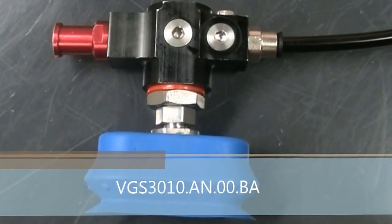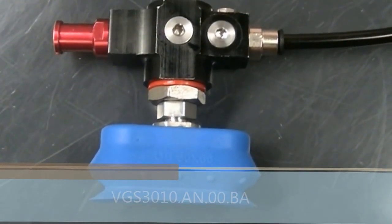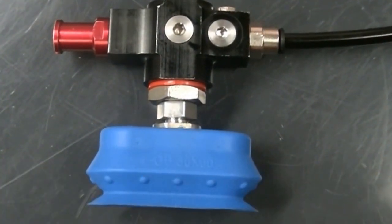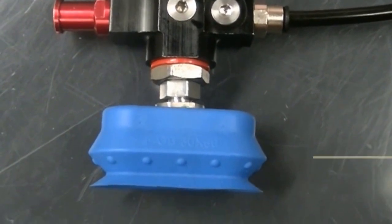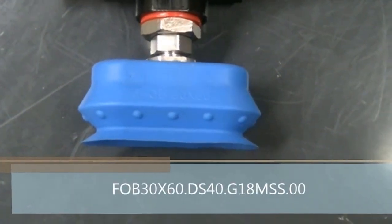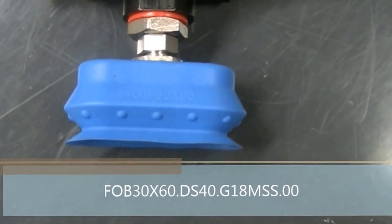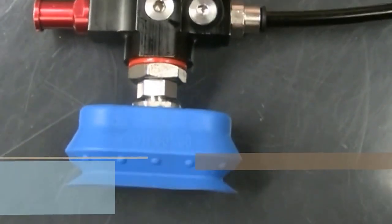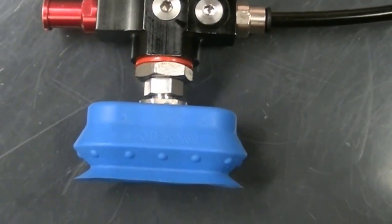For this test we'll be running a VGS-3010 with a two-stage DI cartridge, which is the dust-resistant cartridge without flat valves. We'll also be using a FOB 30x60 oval cup, the food-grade blue silicone cup.